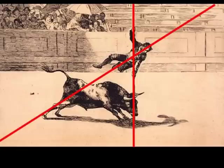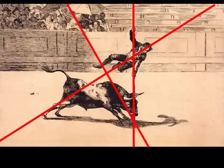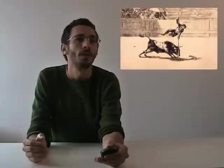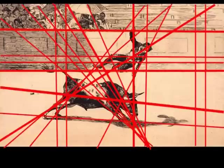Many other directional lines can be drawn, from the shadow cutting across the arena wall, to the axis of the lunging bull, to the actual lines of the arena walls. If one were to find all of the directional forces in this image, the dynamism of the composition becomes quite apparent.